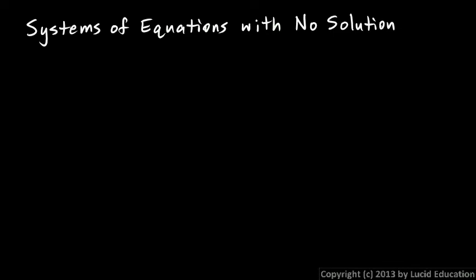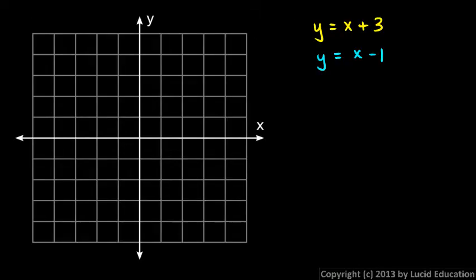It's possible to have a system of equations with no solution. Here's an example: y equals x plus 3 and y equals x minus 1. You can tell by looking at the equations that each of these lines has a slope of 1, and you can see this if you graph them.